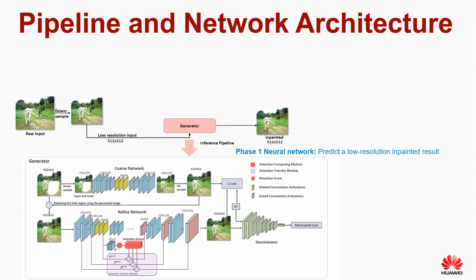In Phase 1, given a raw input image of any size, we simply downsample it to a low-resolution image of size 512x512. We then feed the low-resolution input image and mask to the generator. The generator is a two-stage neural network that performs image inpainting end-to-end, trained with a large number of images in a self-supervised manner. In addition, it predicts a set of attention scores which measure the similarities between in-hole patches and background patches.